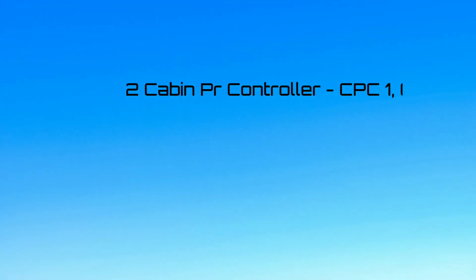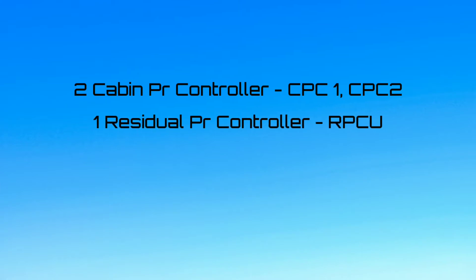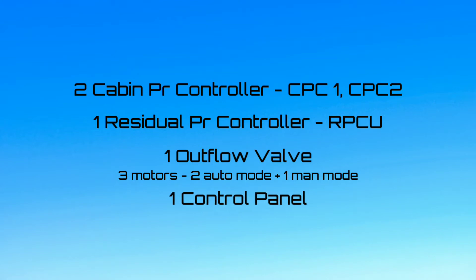The system consists of two cabin pressure controllers, one residual pressure control unit, one outflow valve which can be operated by three motors — two for automatic operation and one for manual operation — one control panel, and two safety valves.